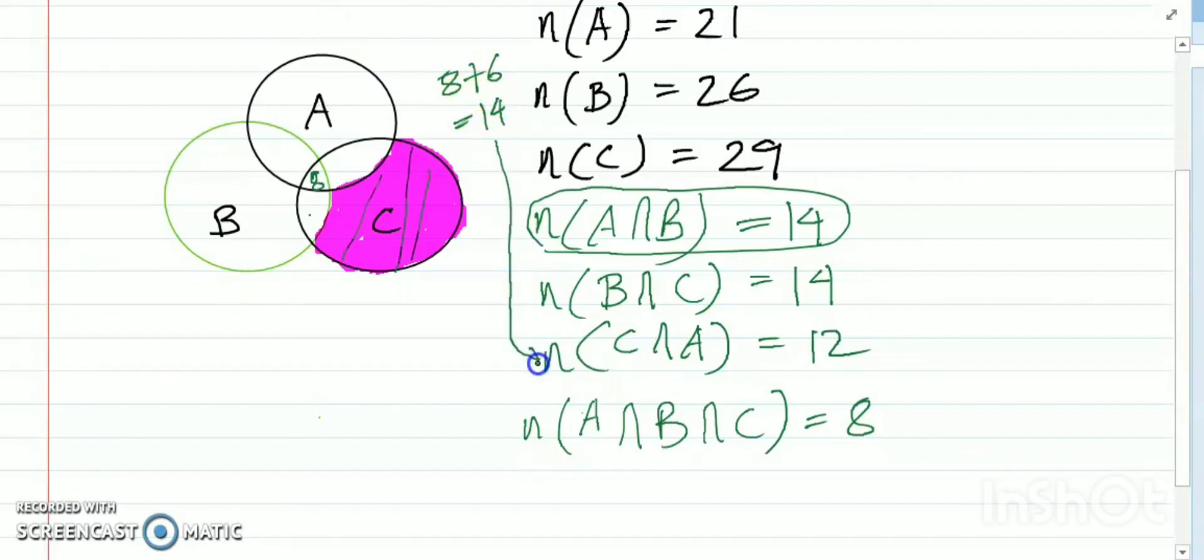C∩A equals... this is 4. This portion is 4, and this portion is 6. So total N(C) equals 29.